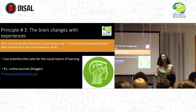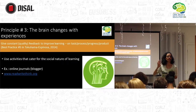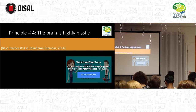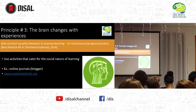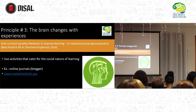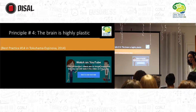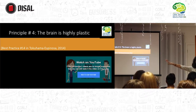Teachers, if you haven't been to readwritethink.org, go — this is the place to be if you want teachers' opinions on different things. Okay, principle number four: the brain is highly plastic. What is neuroplasticity again? Is it an ability or a property? It's a property.